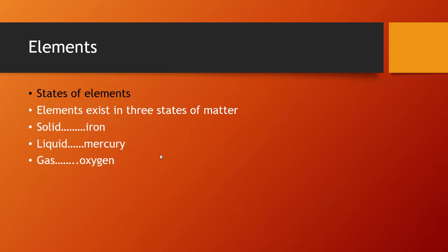The next one: states of elements. Elements exist in all three states of matter, which are solid, liquid, and gas. Iron is an element found in the form of solid. Mercury is present in the form of liquid. And oxygen is present in the form of gas. So elements exist in all three states of matter.